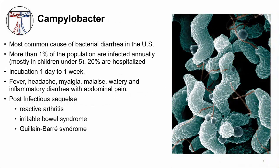Campylobacter is the most common cause of bacterial diarrhea, especially bloody diarrhea, in the United States, with more than one million people infected every year — more common than Shigatoxigenic E. coli and Shigella. The incubation period is one day to one week. Similar to Shigella, you get fever, nonspecific symptoms like headache and malaise, then watery diarrhea that transitions to inflammatory diarrhea with abdominal pain. The pathogenesis is not well understood, partly because there is no good animal model, as Campylobacter is a commensal in many animals. The thought is that Campylobacter invades epithelial cells and triggers host inflammatory responses, leading to inflammatory diarrhea.